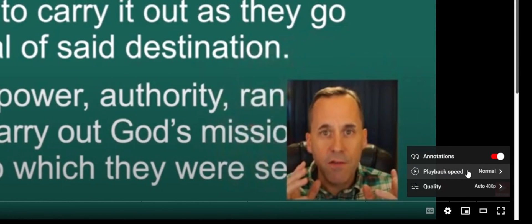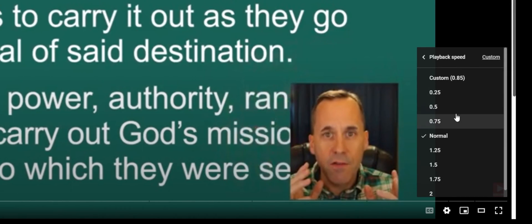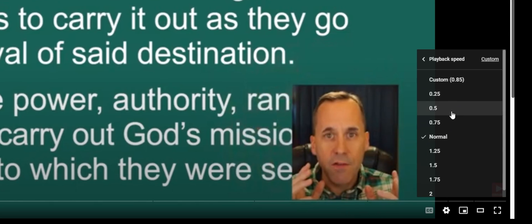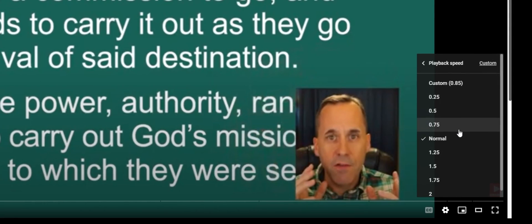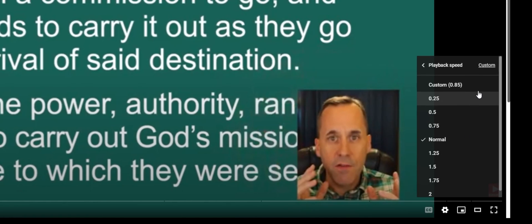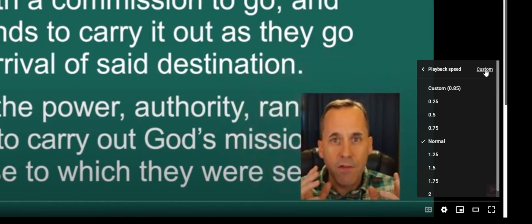And it says playback speed normal, but you'll click on this. And when this opens up, you will see some predetermined increments that are 25%. You won't want any of those. What you'll want to do is come right up here to the right where it says custom and click on that button.